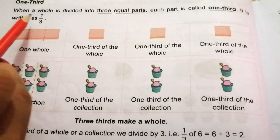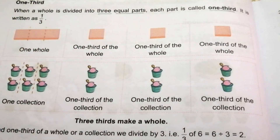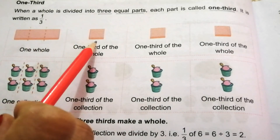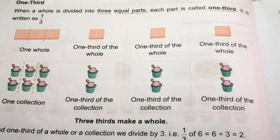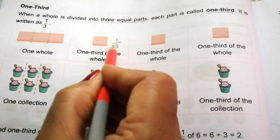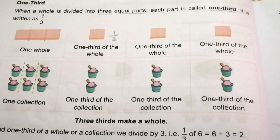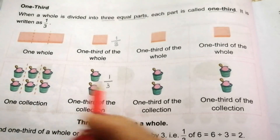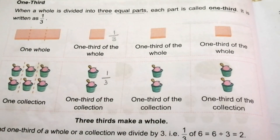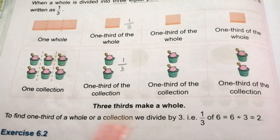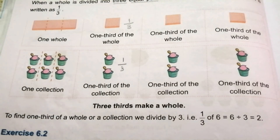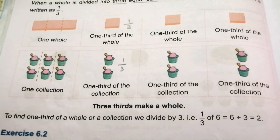The next common fraction is one third. When a whole is divided into three equal parts, each part is called one third, written as 1 by 3. One whole is divided into three equal parts, each represented by one third. For a collection of 6, divided into three equal parts, each part has 2 objects, also written as one by three. To find one third, we divide by three: 1/3 of 6 equals 6 divided by 3 equals 2. To find half, divide by two; to find one quarter, divide by four; to find one third, divide by three.